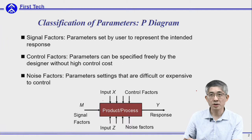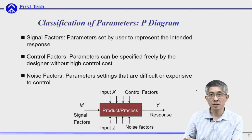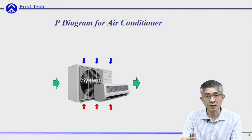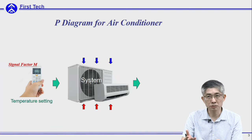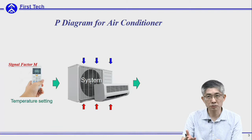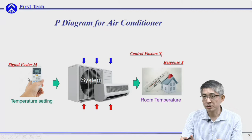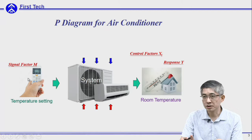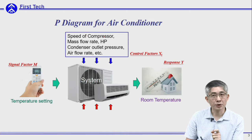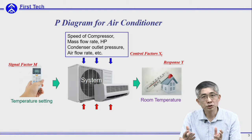Let me use an air conditioner as an example to explain the P-diagram. Say this is the system you want to design. We can assume the desired temperature will be the user's signal factors — whatever temperature he sets is his intention for the room temperature. The response will be the actual temperature of the room. As for control factors, as engineers you would like to design the system so we can control the speed of the compressor, the power of the compressor, the flow rate, the pressure, and air flow rate. These are all control factors that can be changed by the designers.